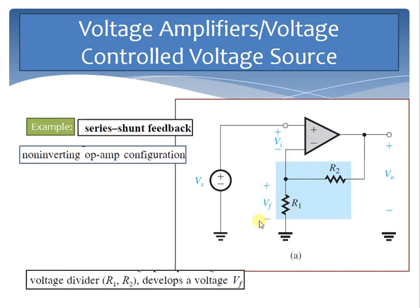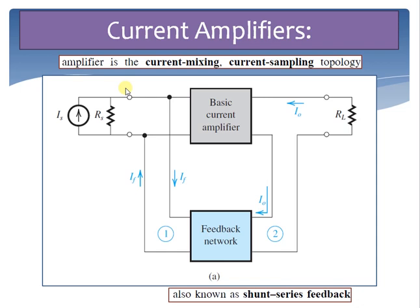The change in Vf is the same polarity as the change in Vs, confirming negative feedback. This non-inverting op-amp configuration is a good example of series-shunt feedback. Moving on to the second topology — the current amplifier — the input signal is essentially a current, so the signal source is represented by Norton's equivalent. The output is current, so the feedback network should sample the output current, with the feedback signal in current form mixed in shunt with the source current.